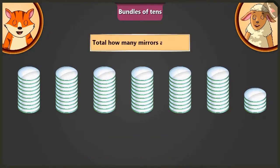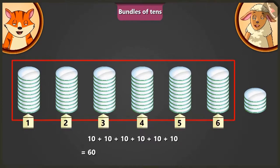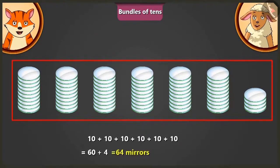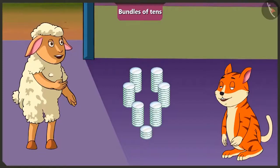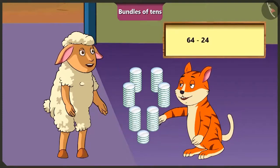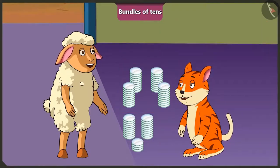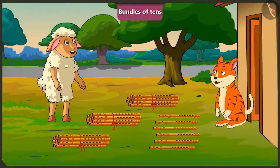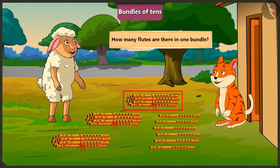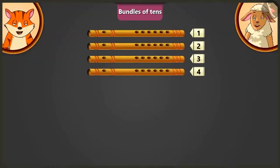So, how many mirrors are there in all? There are a total of six groups of ten, that means sixty, and four — sixty-four mirrors. Wow, Lily, you counted so many mirrors very easily. Look, now I can give you twenty-four mirrors out of these sixty-four mirrors. So, I will have forty mirrors left. Thank you, Billy. Come on, now let us count these flutes. Billy, how many flutes are there in one bundle? One, two, three, four, five, six, seven, eight, nine, ten.